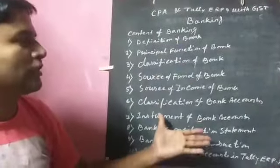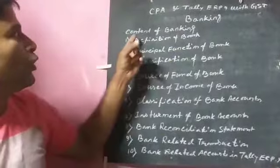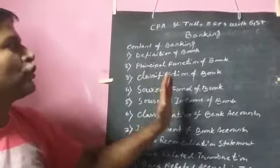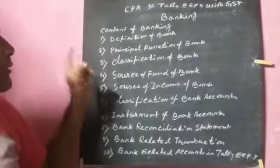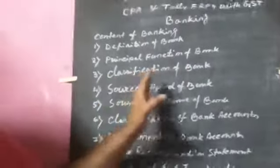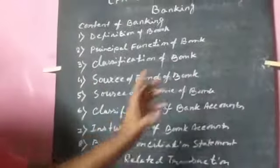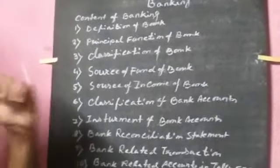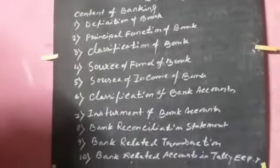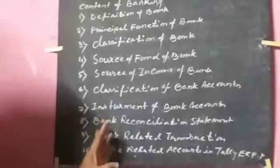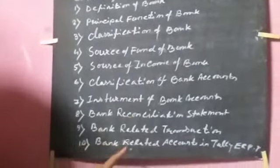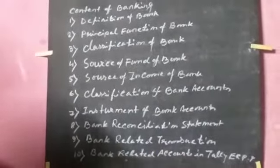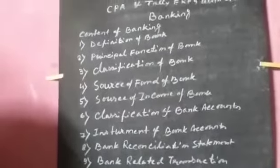First, you have to understand the content of banking and finance. Number one, you have to know the definition of bank. Then the principal function of banking, then classification of banks, then the source of fund, then the source of income of bank, then classification of bank accounts, then instruments of bank accounts, and then — very very important — you have to reconcile the bank statement with the bank books with your company books, and then bank-related transactions as well.